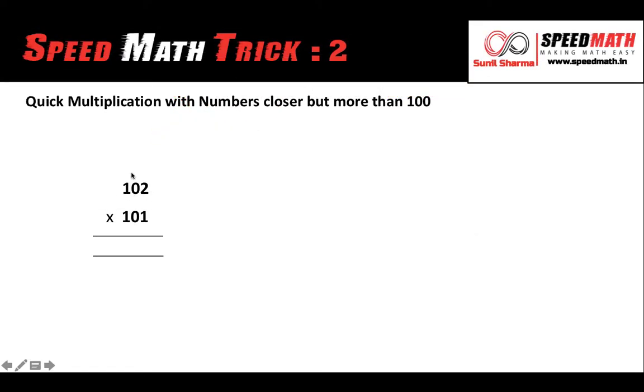Now observe 102 and 101, they're very close to this number which is 100. So 100 becomes a reference number or sometimes it is also called as a base number.